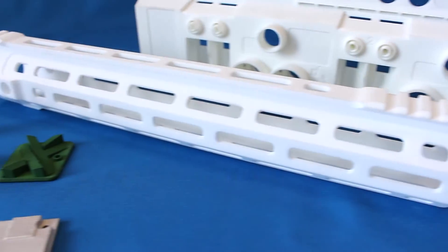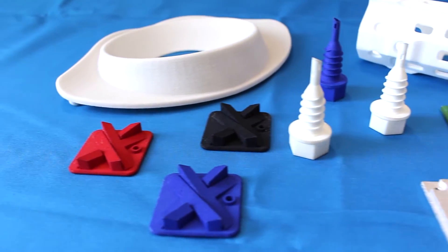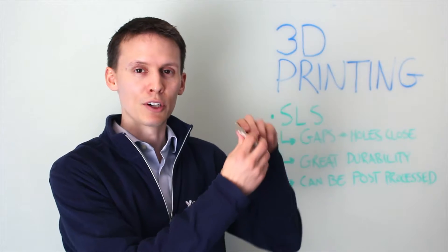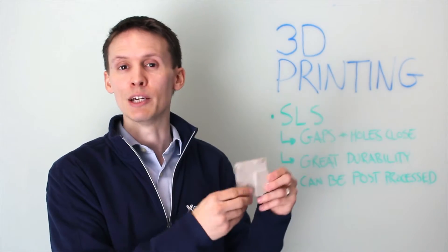And it always can be post-processed, so we could do things like dye parts. We can even media tumble them. And one of the processes we add is nickel plating, which makes the parts much more mechanically stiff and is used more for durability or even EMI shielding.